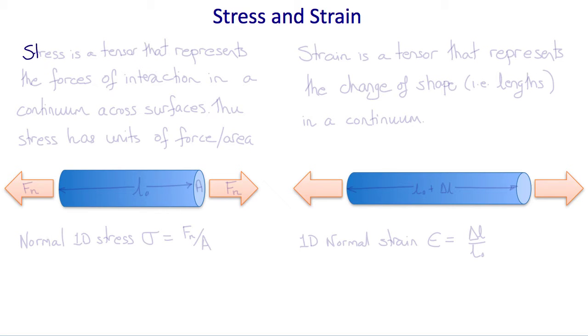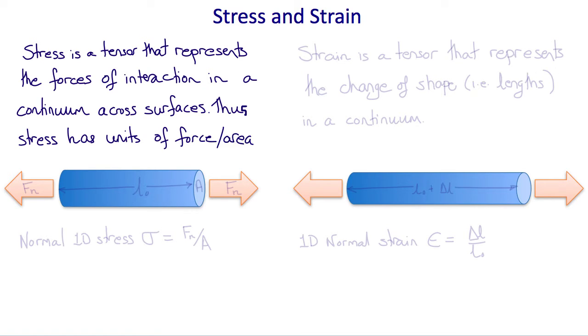Let's start by looking at the concepts of stress and strain in one dimension. Stress is a tensor that represents the forces of interaction in a continuum across surfaces. Therefore, stress has units of force per area. So let's consider tension applied to this cylindrical sample with cross-sectional area A with forces normal to that cross-section Fn. The normal one-dimensional stress sigma in this example is Fn divided by A, and this is a tensile stress.